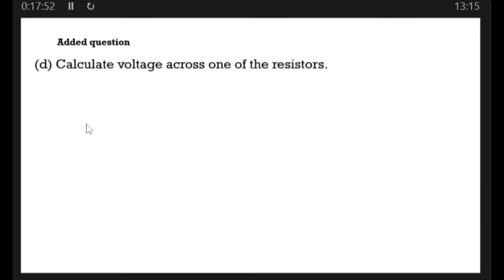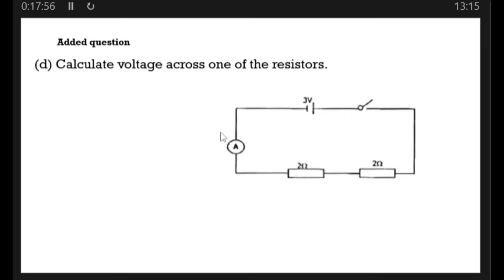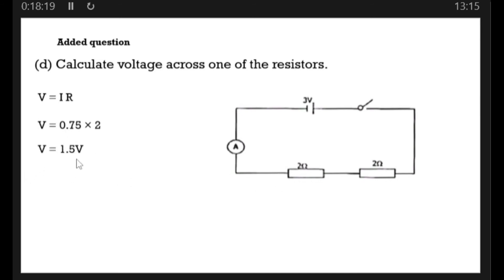For question (d): calculate the voltage across one of the resistors. Voltage is given by V = I × R. The current flowing is 0.75 amps, and the resistance of one resistor is 2 ohms, so V = 0.75 × 2 = 1.5 volts. Equally, the other resistor also has 1.5 volts across it since both offer the same resistance.